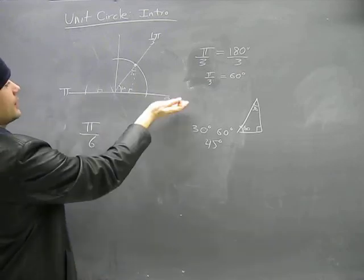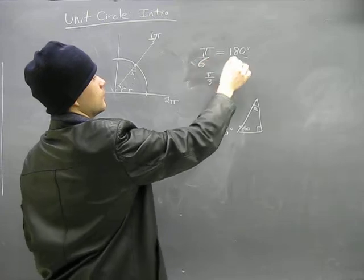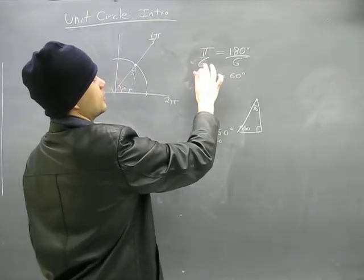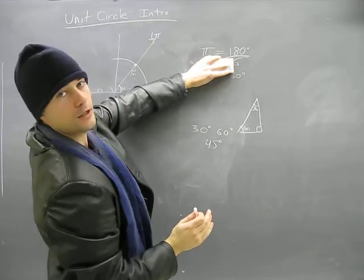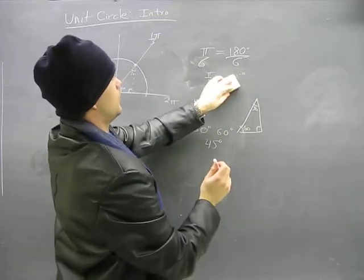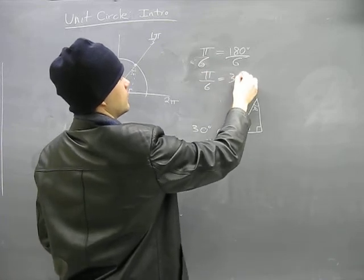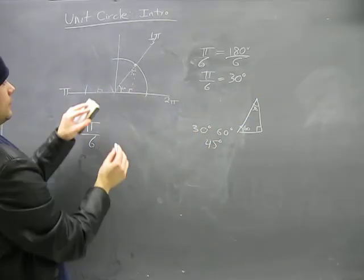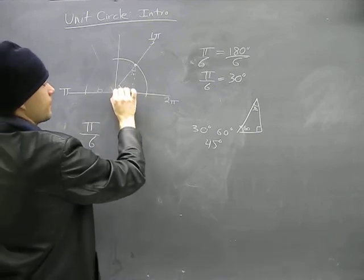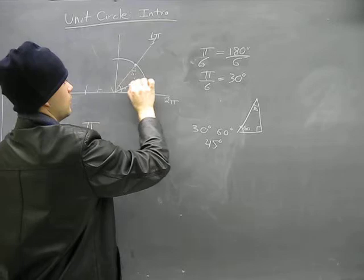What that means is that we're going to divide 180 into six groups. Well, that pi sixth, if pi is 180 degrees, that means pi sixth is 180 divided by 6. And so what that means is that pi sixth is 30 degrees. So that means we're going to get, every 30 degrees, we're going to have another triangle.